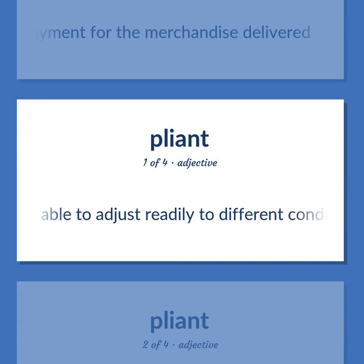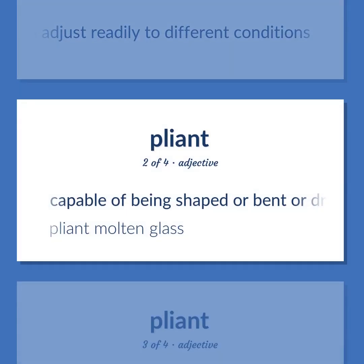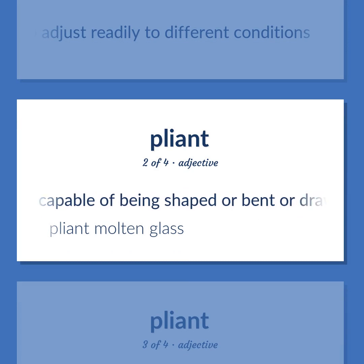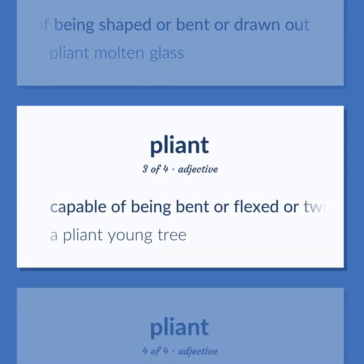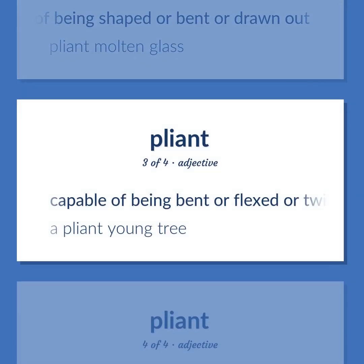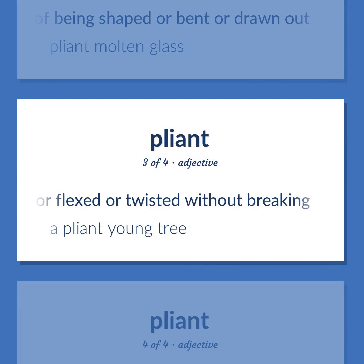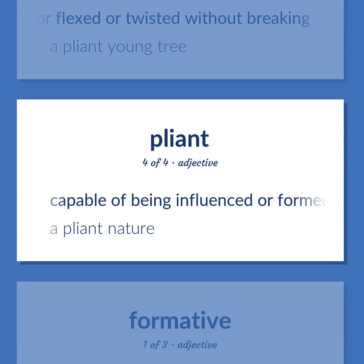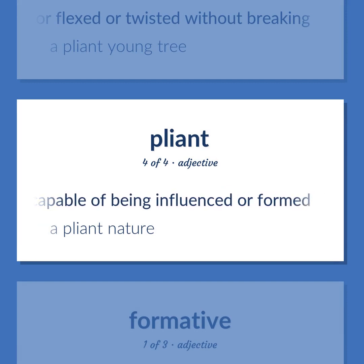Pliant: Able to adjust readily to different conditions. Capable of being shaped or bent or drawn out. 'Pliant molten glass.' Capable of being bent or flexed or twisted without breaking. 'A pliant young tree.' Capable of being influenced or formed. 'A pliant nature.'